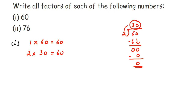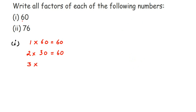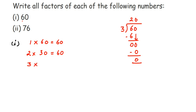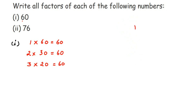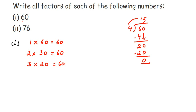Does 60 go in the 3 table? Yes, because 3 twos are 6 and we have a 6 here. Dividing 60 by 3: 3 twos are 6, drop the 0, 3 times 0 is 0, remainder is 0. So 3 into 20 is equal to 60. Next, checking 4: dividing 60 by 4 gives remainder 2 in the first step, then drop the 0, 4 fives are 20, remainder is 0. So 4 into 15 is equal to 60.